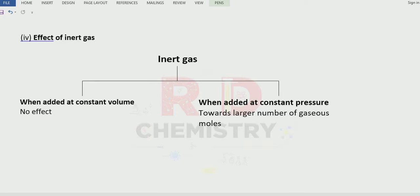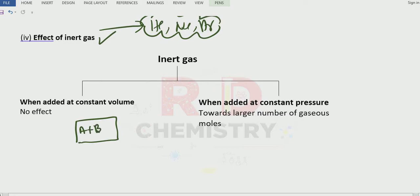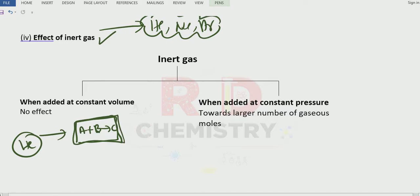Next, the effect of inert gases — such as helium, neon, and argon. These are inert gases that do not react with other chemicals easily. There are two conditions. First, if the volume of the vessel is fixed and a reaction A + B ⇌ C is taking place, suppose you add helium. Helium will not react with gases A, B, and C. If you add the inert gas at constant volume — volume is not increased — then there is no effect of that inert gas on the equilibrium.